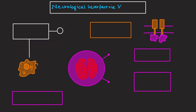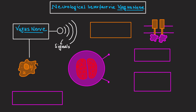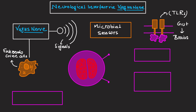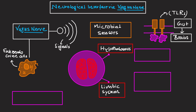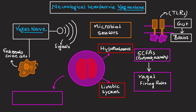Neurological interface via vagus nerve. The vagus nerve transmits afferent signals from enteroendocrine cells and microbial sensors like toll-like receptors in the gut to brain regions such as the hypothalamus and limbic system. Microbial metabolites including short-chain fatty acids, butyrate, and acetate can modulate vagal firing rates.